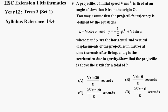where x and y are the horizontal and vertical displacements of the projectile in meters at time t seconds after firing, and g is the acceleration due to gravity. Show that the projectile is above the x-axis for a total of A, B, C, or D seconds.